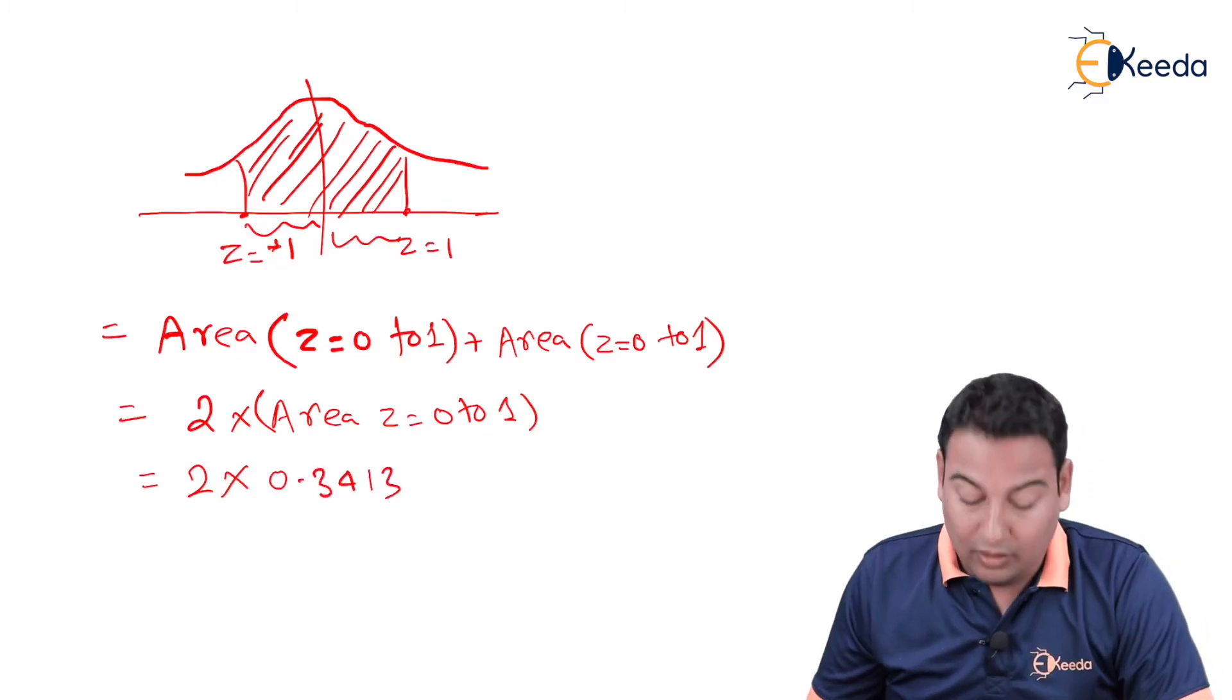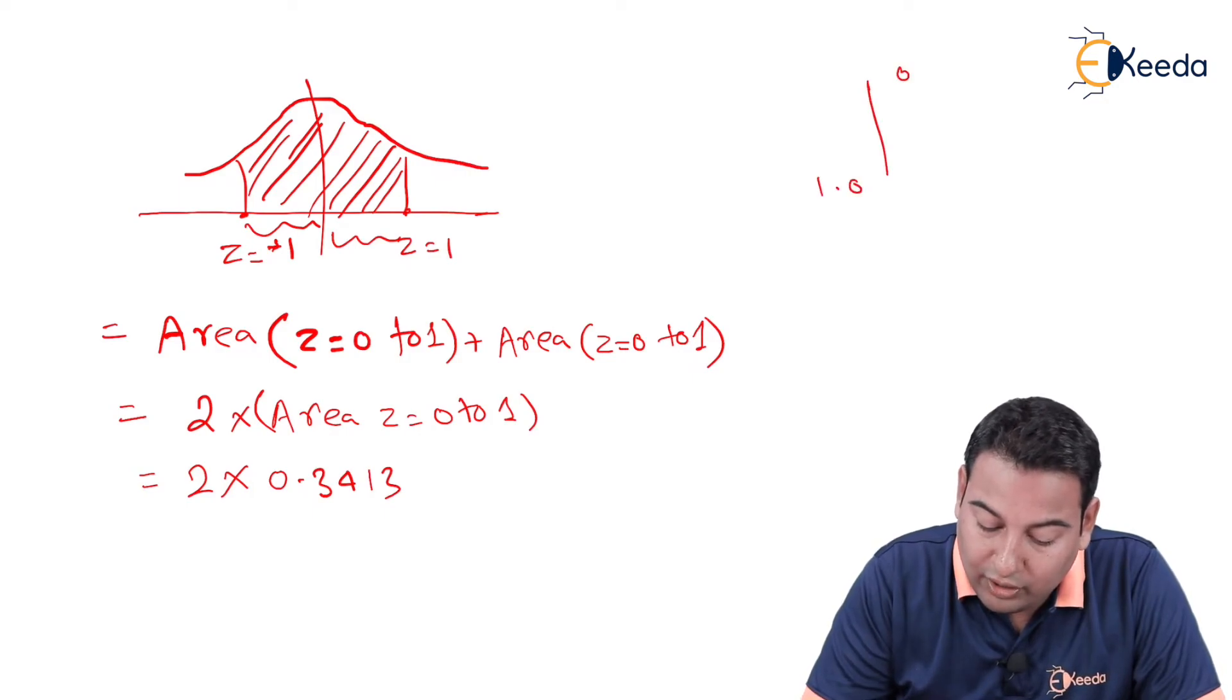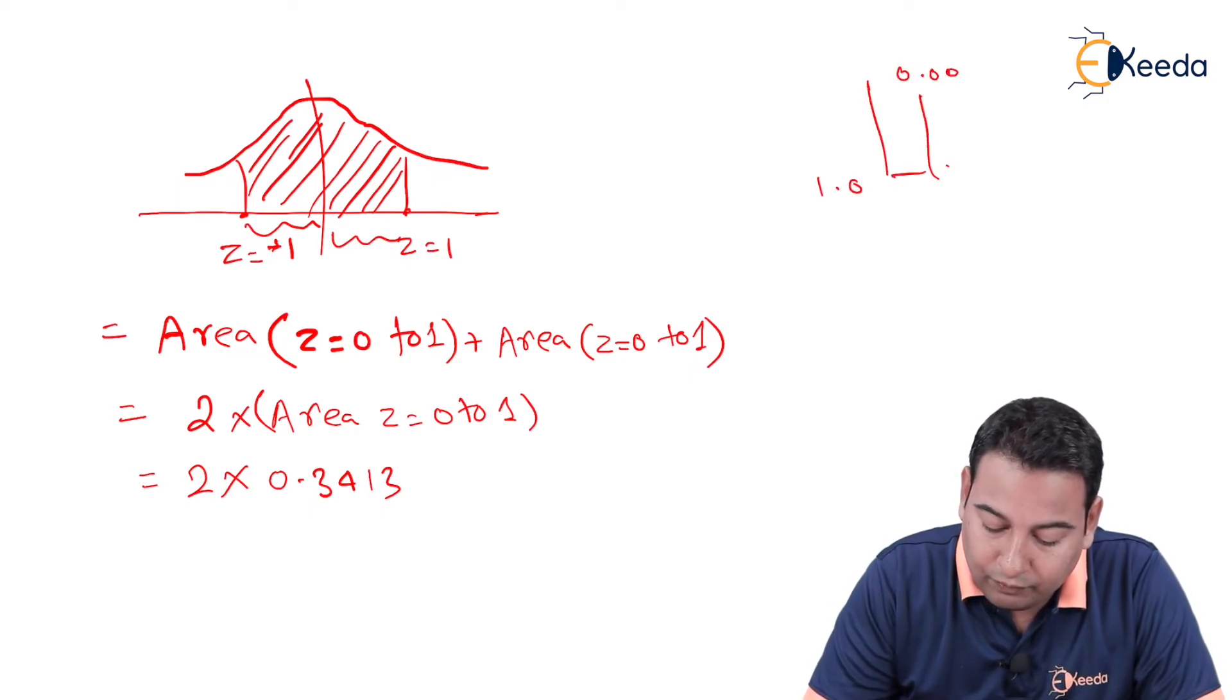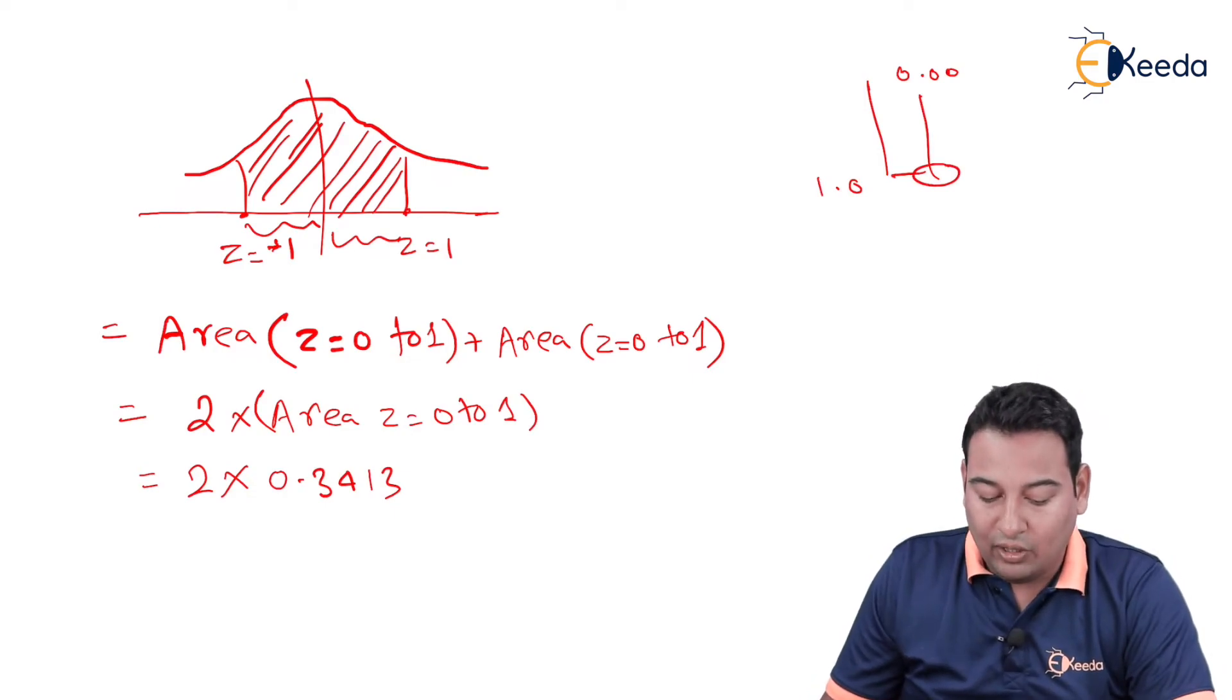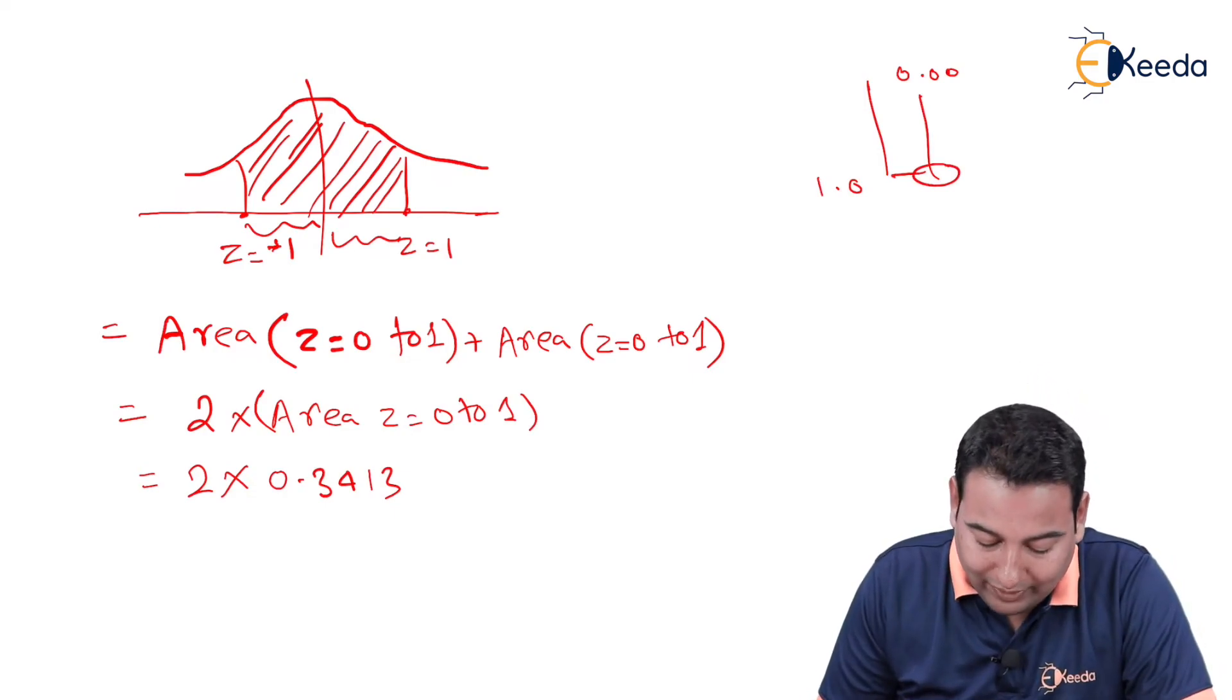How to find? Go to z table, here you will find 1.0, here it will be 0.00. This way you are going to get the value as 0.3413. If you multiply by 2, you will get 0.6826.